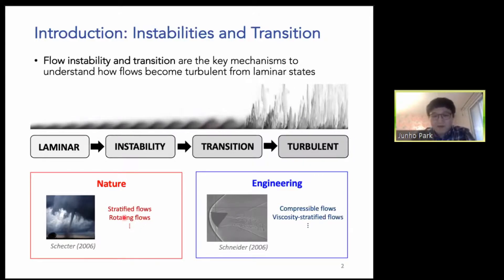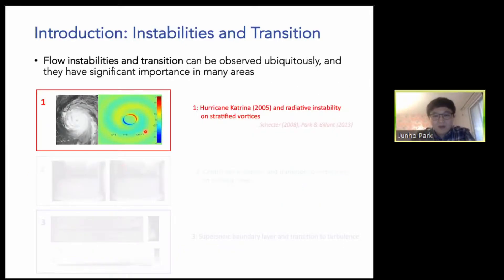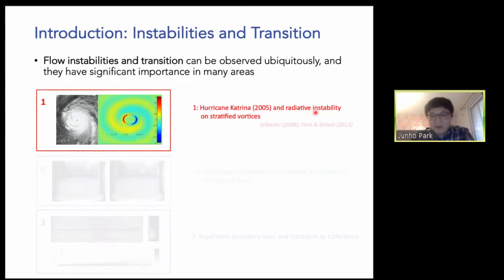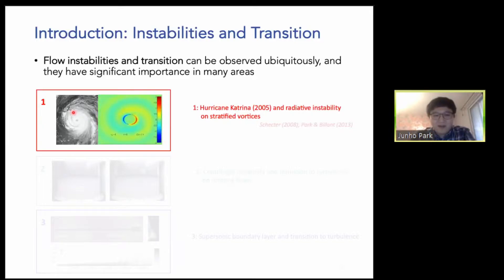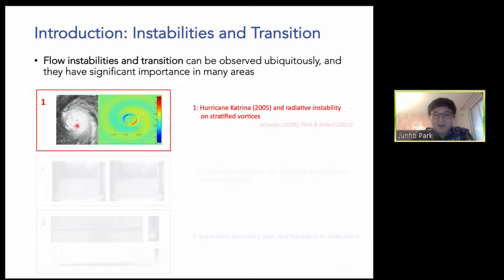For instance, we can observe in geophysical vortices that they can support some type of instability called the radiative instability. Of course the cloud formation around a hurricane involves a very different instability, but I just want to mention that these vortices can support instabilities that can transfer momentum outwards.